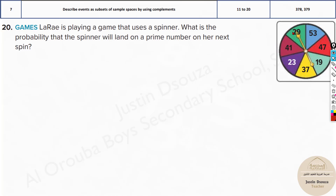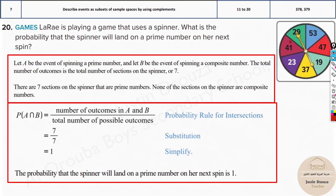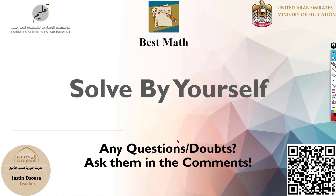LaRae is playing a game with a spinner. What is the probability that the spinner will land on a prime number on the next spin? Looking at the numbers: 29, 53, 47, 19, 37, and 23 are all prime numbers. Basically, all 7 numbers on the spinner are prime, so no matter what you spin, you land on a prime. The probability is 100%, or 7/7 = 1. Remember: if there are too many things to consider, just do 1 minus that probability; otherwise, read and interpret the problem and answer directly.